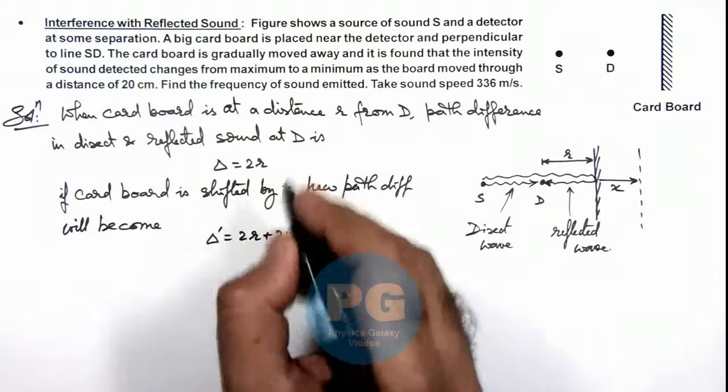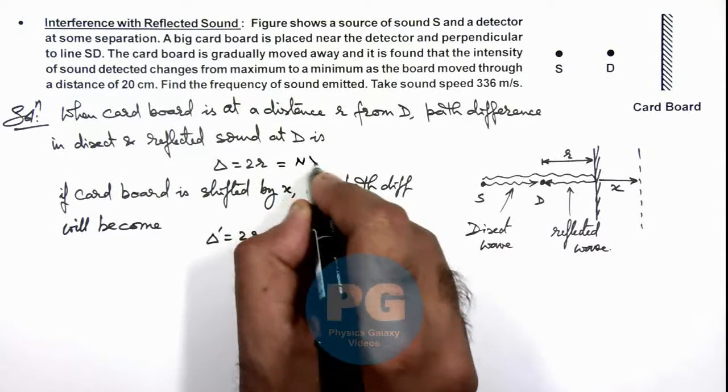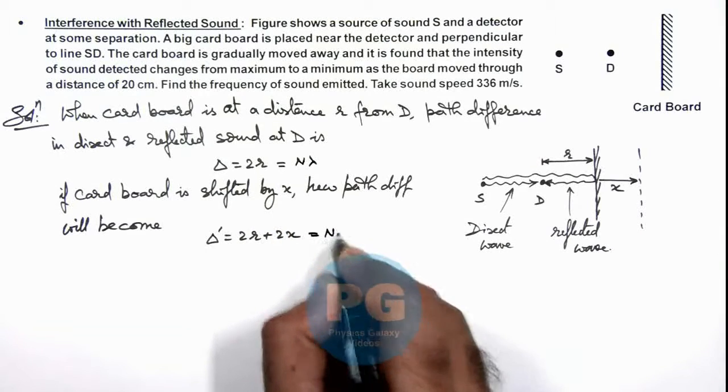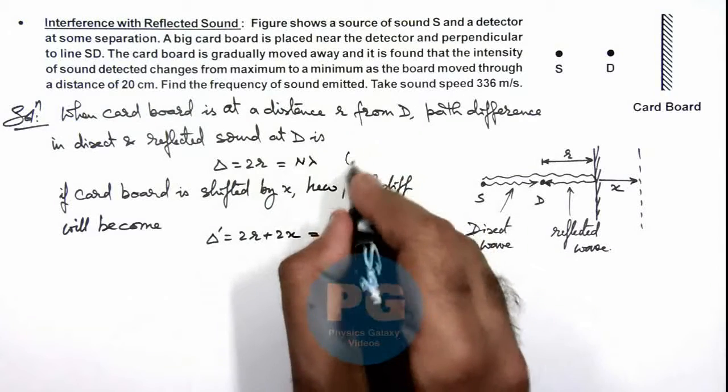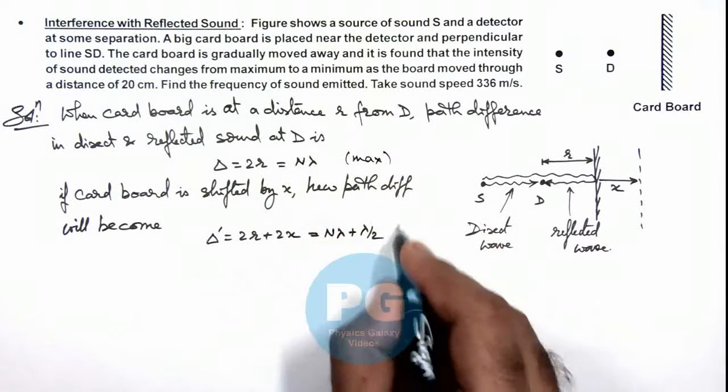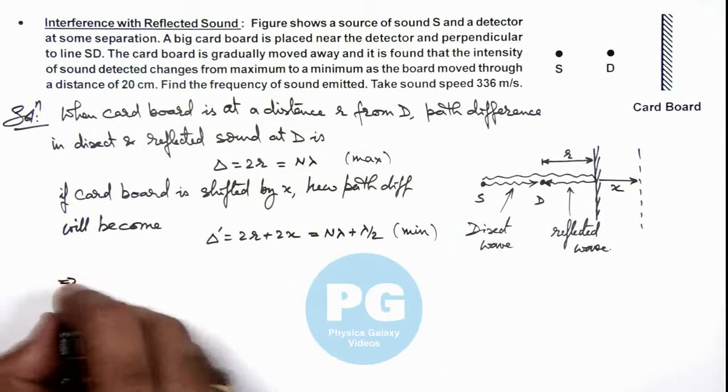So initially we can consider this path difference would be a multiple of lambda, then this would become n lambda plus lambda by 2. Then only if this is a maxima, this will become a minima. So this implies here we can write 2x should be equal to lambda by 2.